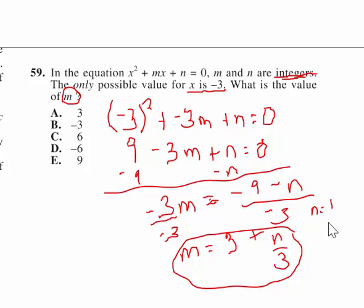All right. So, that can't be correct. Let's try n equals 2. When n equals 2, m equals 3 and two-thirds. Again, not an integer.